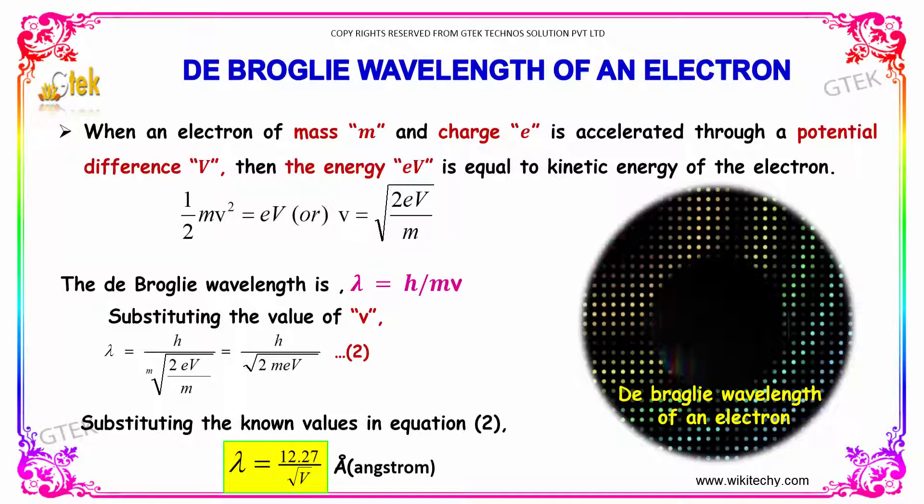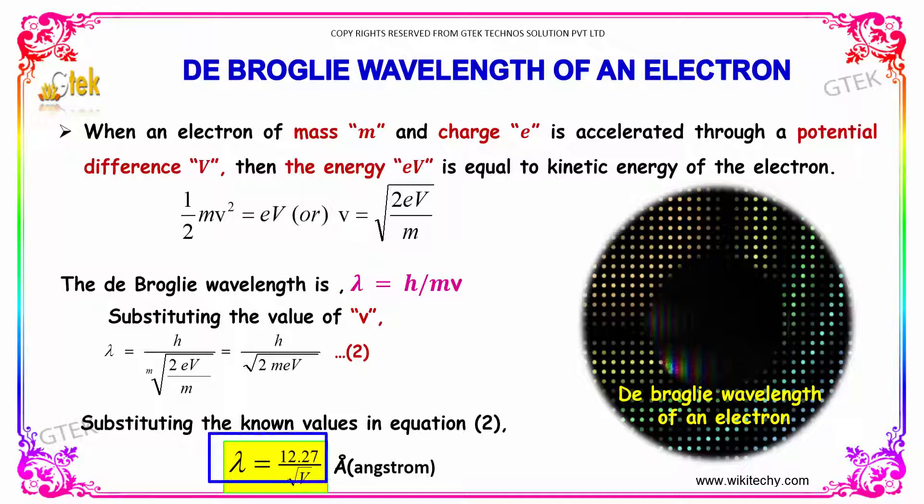Substituting the known values in equation 2, we get λ = 12.27/√V angstroms.